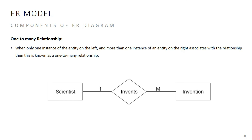One-to-many relationship: one entity on the left side is related to many entities on the right side. For example, one scientist can invent many inventions. That is a one-to-many relationship.